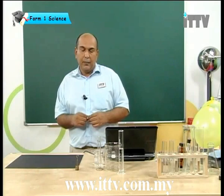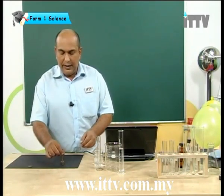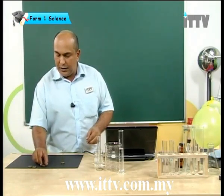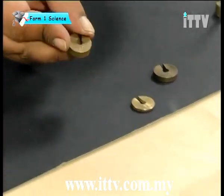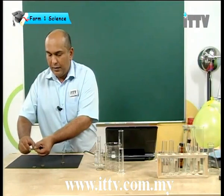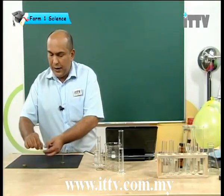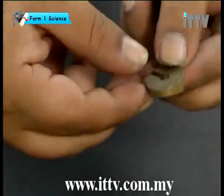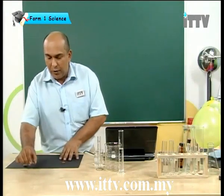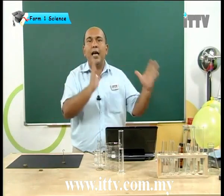We'll start off with solids. What I have in front of me here are some weights that we use in the laboratory. These weights have been weighed so that we know their mass. This weight has a mass of 10 grams, this one has a mass of 5 grams, and this one has a mass of 10 grams as well. So each one of these solid objects has a mass. Solids have mass.